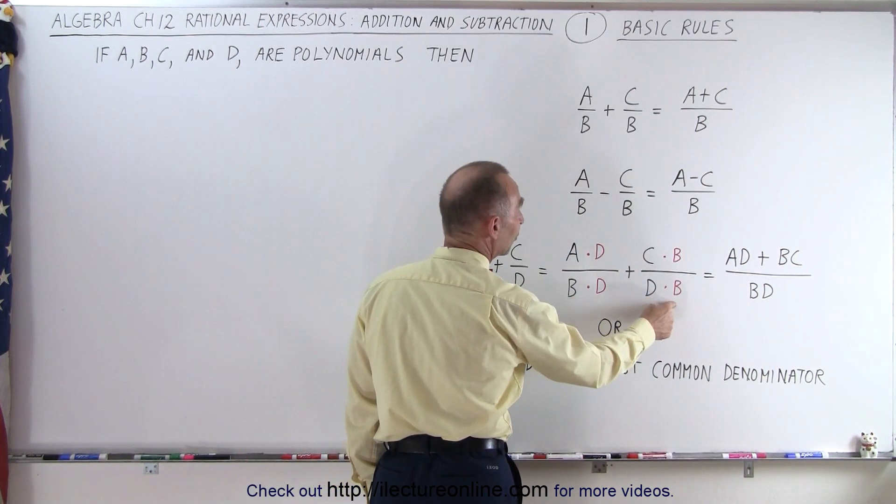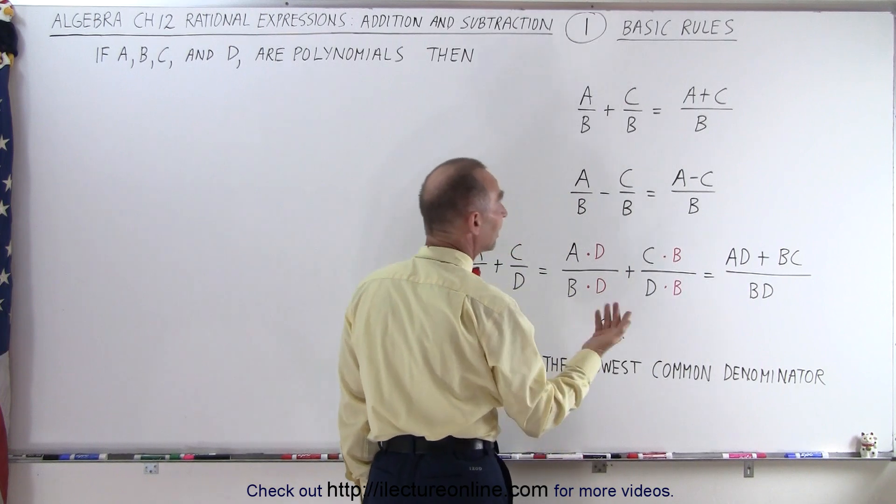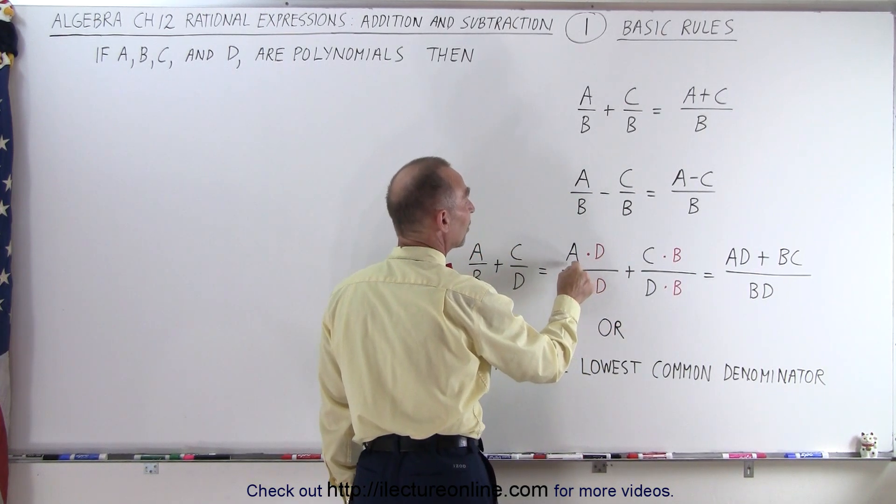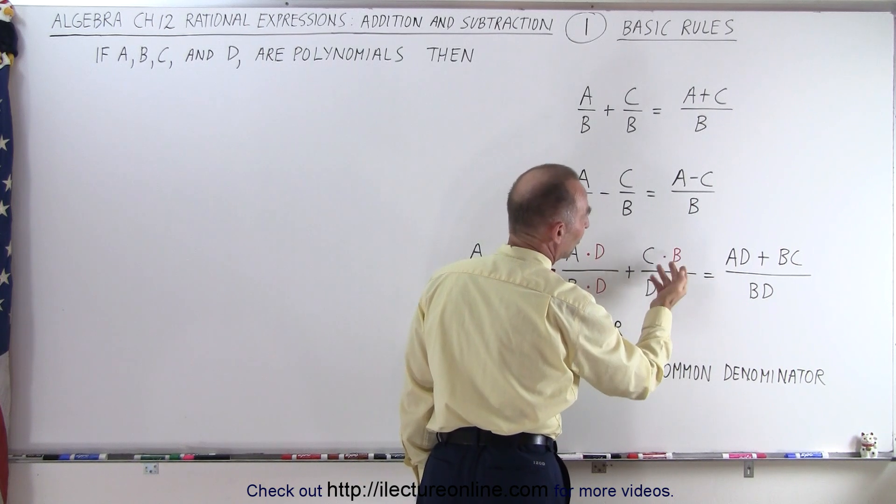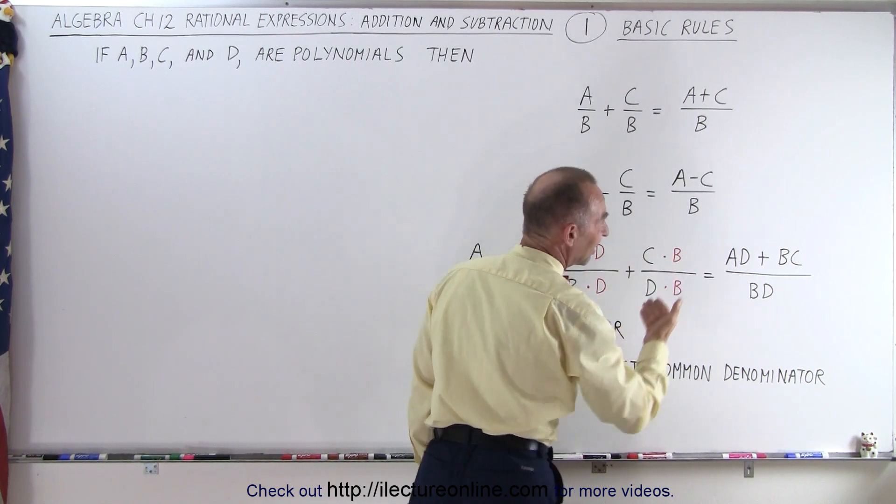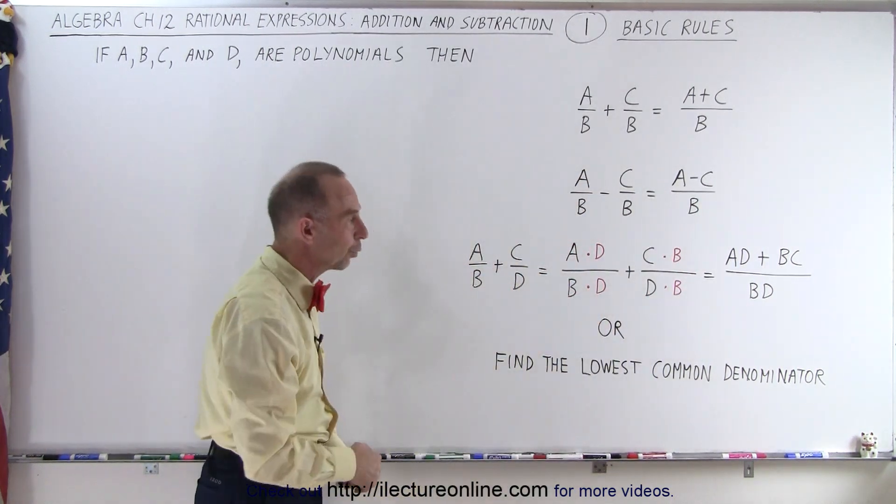B times D is the same as D times B, which is BD. And then we can write the two numerators A times D plus B times C. It doesn't matter if we write C times B or B times C. I always like to write it in alphabetical order.